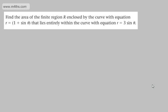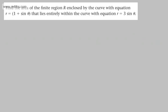In this question, we're asked to find the area of the finite region R enclosed by the curve r = 1 + sin θ that lies entirely within the curve r = 3 sin θ. This is our fourth one looking at area, and by the looks of it, this is going to be a lot of work. So if you've not seen those previous videos, please take a step back and look at them, because I'm going to assume you've understood everything we've done so far.